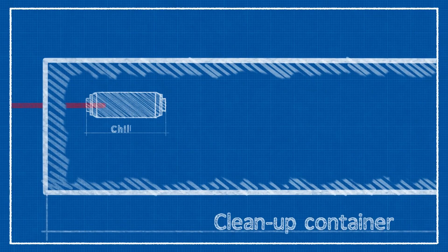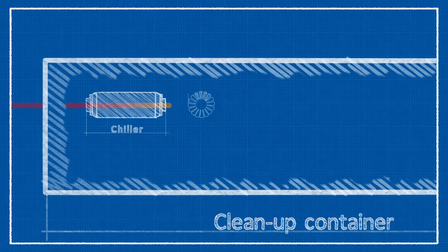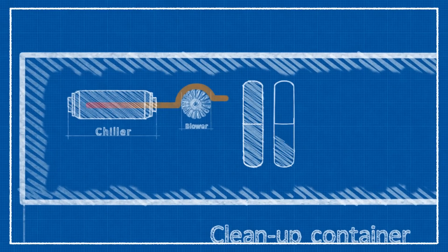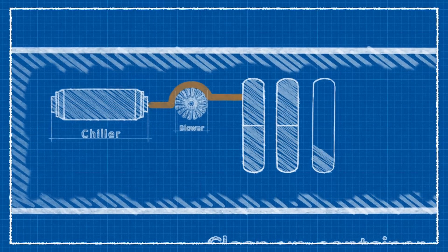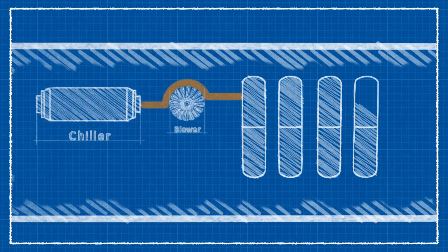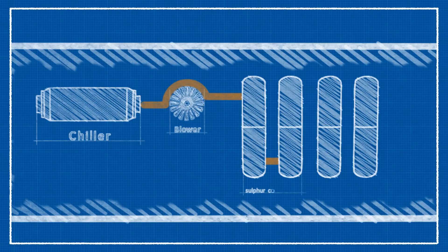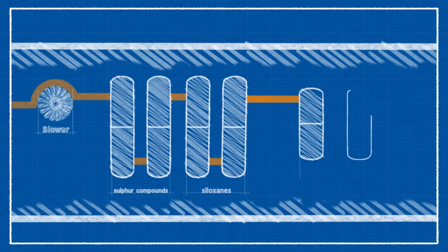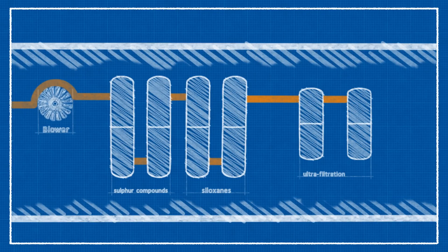Biogas is first dried with a chiller, and then pushed through an absorption cleaning system with a blower. The clean-up is developed with a lead and lag configuration, composed of two series of reactors, selective on sulfur compounds and siloxanes. An ultra-filtration lead and lag system is also available.